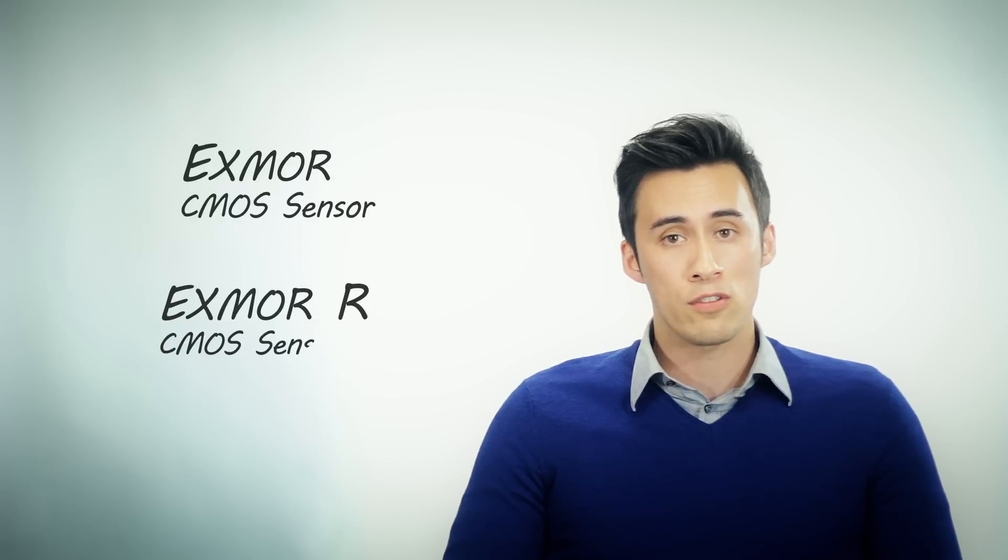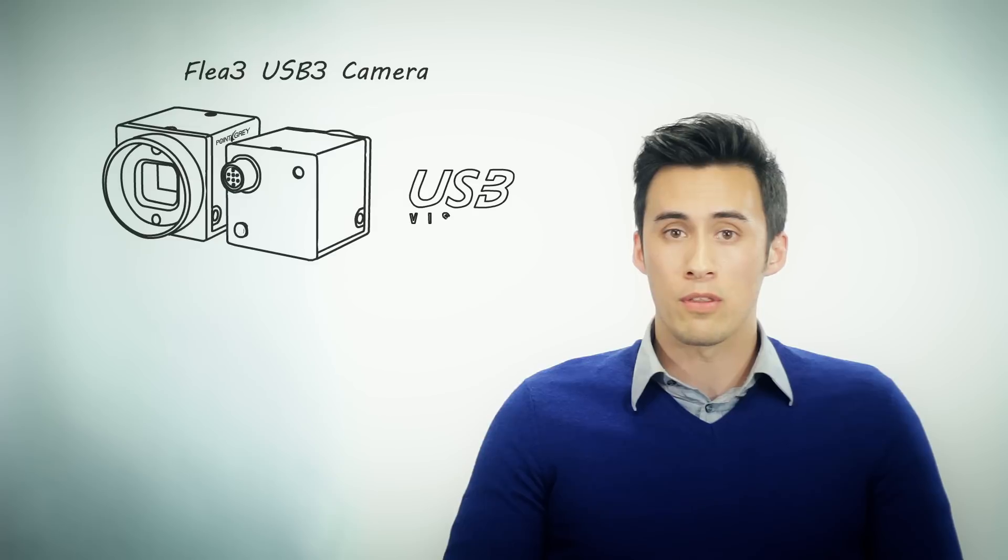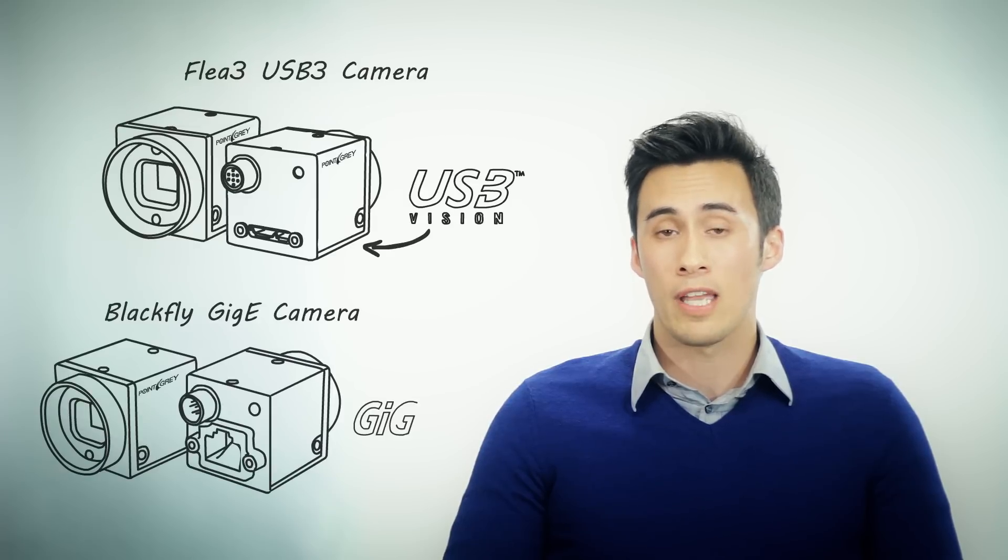Over the years, improvements in CMOS image sensors have made CMOS a viable option for many vision applications. Two key CMOS improvements come in the form of Sony's Exmor and Exmor R technologies, which can be found in both our Flea 3 USB 3 and Blackfly GigE line of cameras.